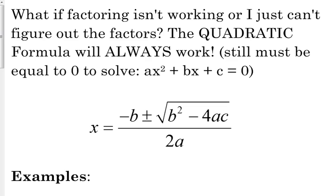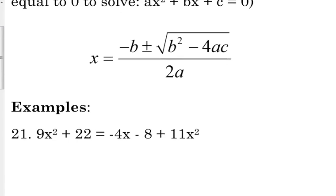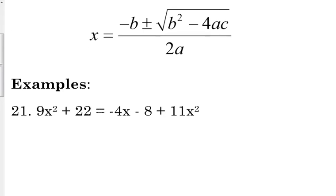So let's look at an example. Let's look at number 21. We are going to solve this using the quadratic formula. So looking at it, I've got a bunch of the same stuff on both sides. I have quadratic terms on both sides. I have constants on both sides.